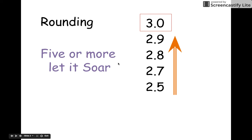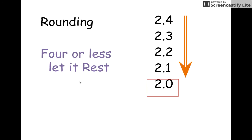So, 5 or more, let it soar. 5 or more, it's going to go up. If it's 4 or less, you just let it rest and make it go down to the number that it's already there.